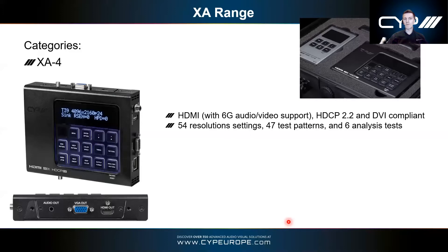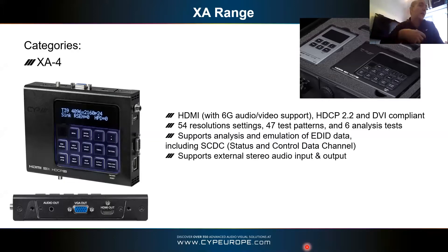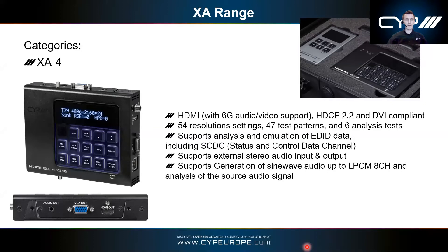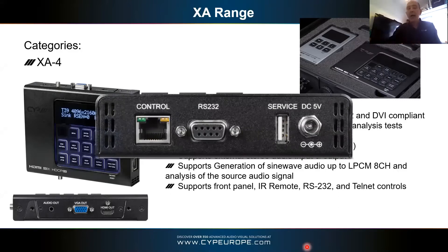The XA4 has significantly more output resolutions and test patterns than the XA3P's 23 and 11. It has more resolution settings, more test patterns, and more analysis tests. A nice feature allows you to upload a picture — like your company logo — to use as a test pattern. It also adds VGA as well as HDMI, whereas the smaller unit is HDMI only, plus a separate audio input and output for testing audio sources going through to HDMI.